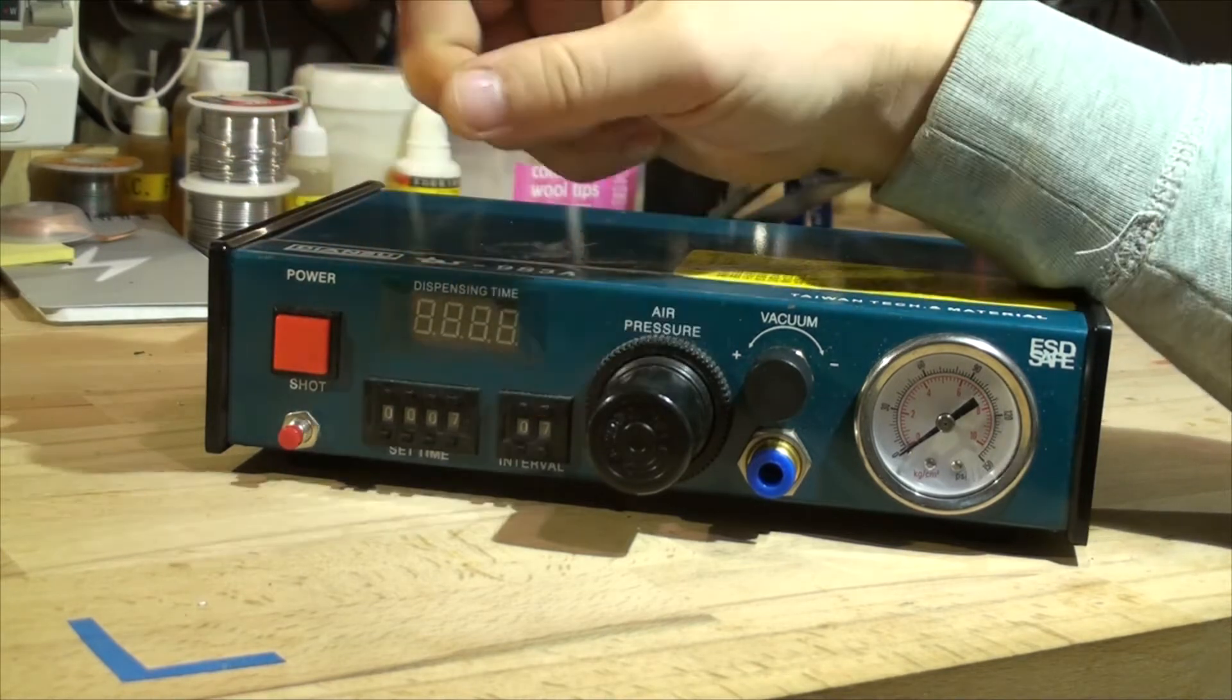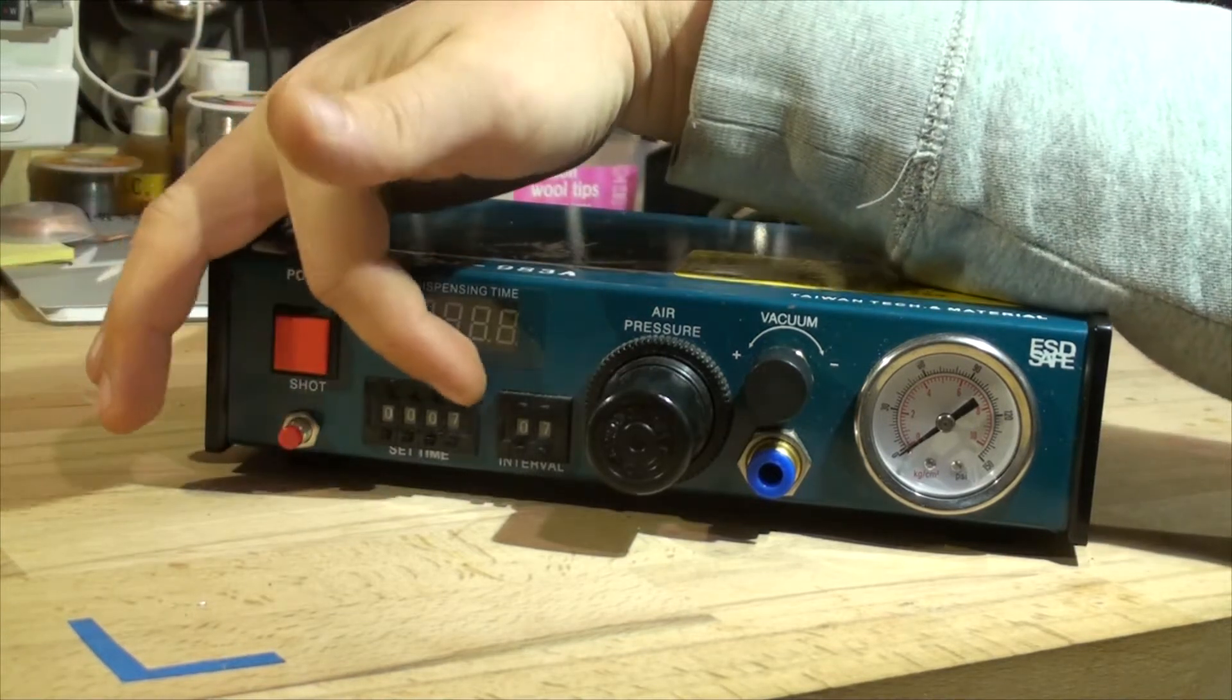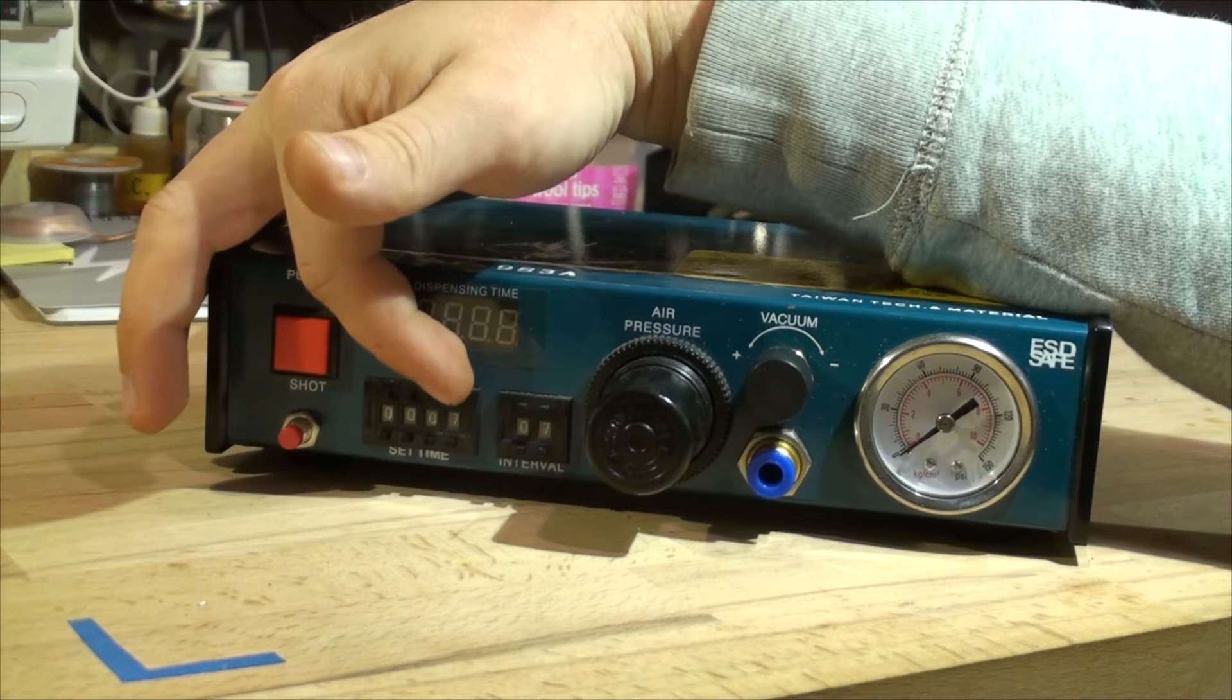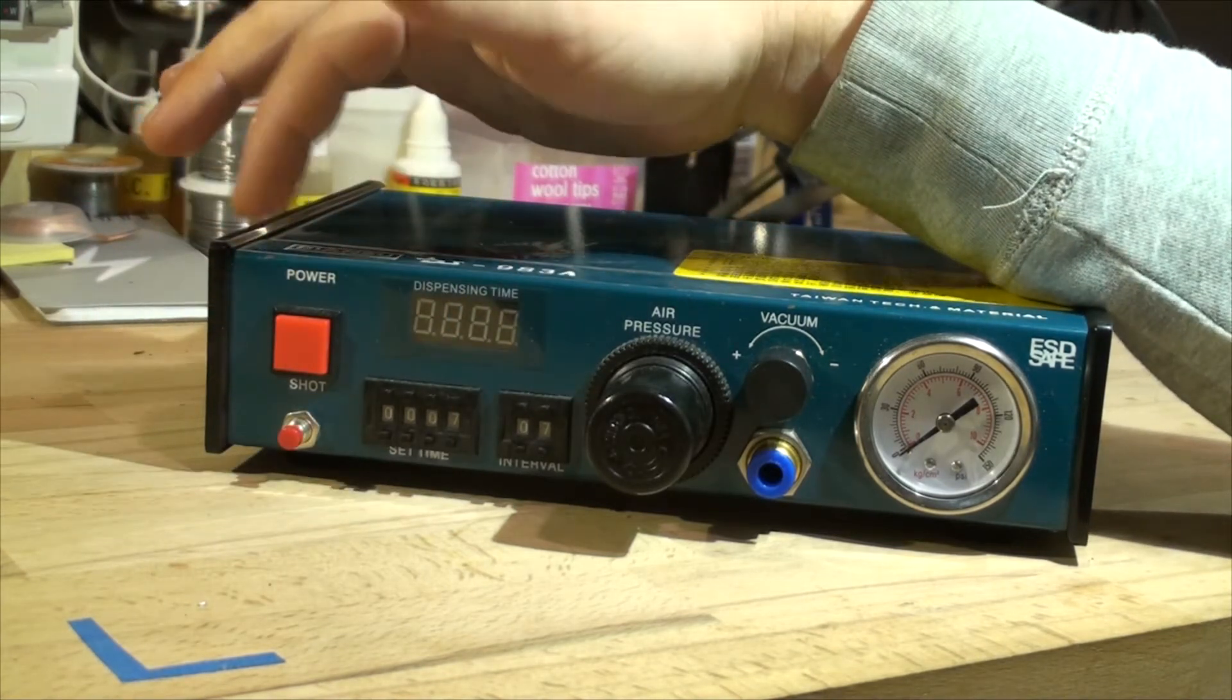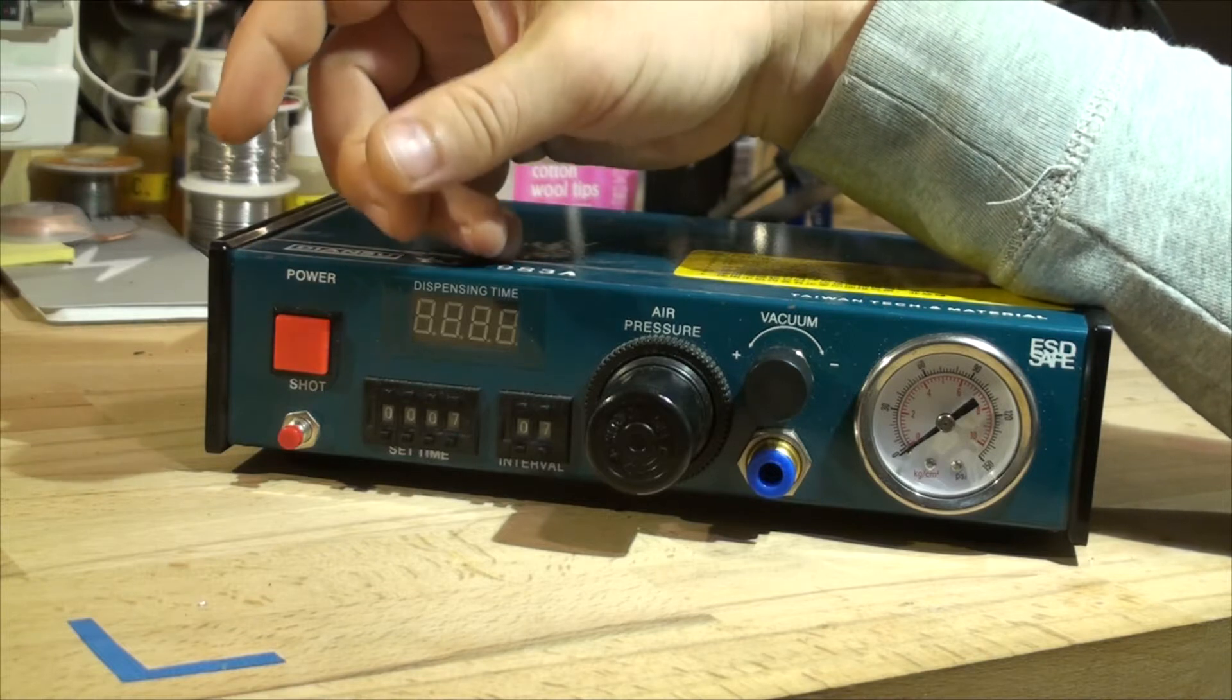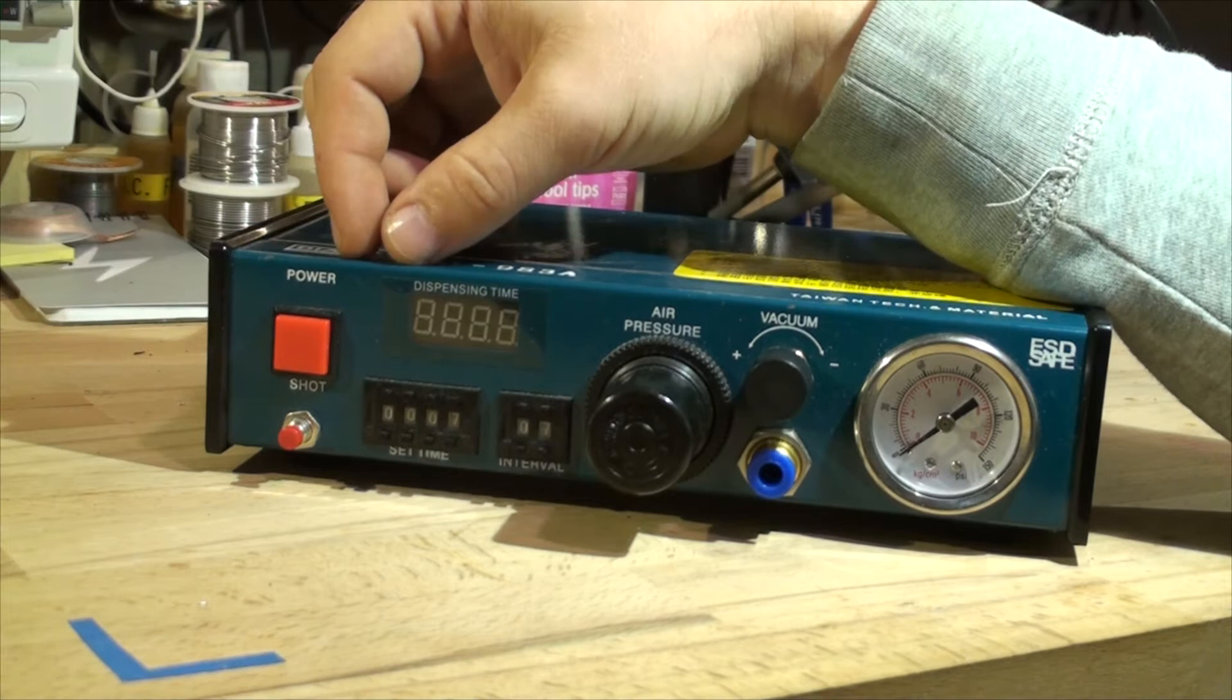This is the interval. So if you're holding down the dispense button, like say this one, it'll be dispensing it for say seven milliseconds and then wait for two seconds, then start dispensing again. So this way you don't have to keep pressing every single time, you can just hold down the button and it'll do dispensing every couple of seconds.